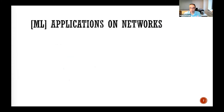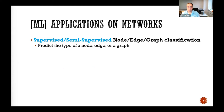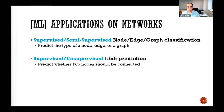Once you have these networks, the question is what can you do with them? There are lots of ML applications that take a network as input. There are supervised and semi-supervised node, edge, and graph classification methods where the goal is to predict some type, and supervised or unsupervised link prediction where the goal is to predict whether two nodes should be connected.